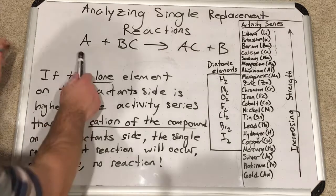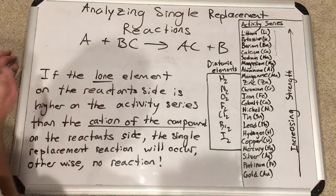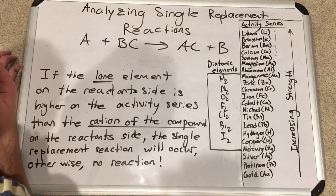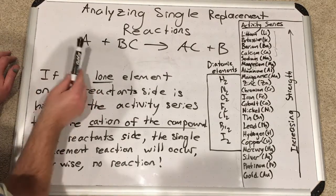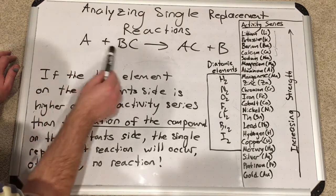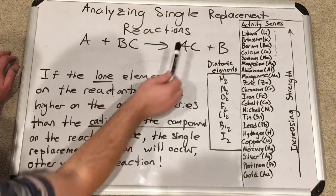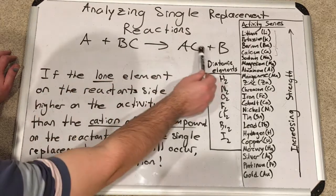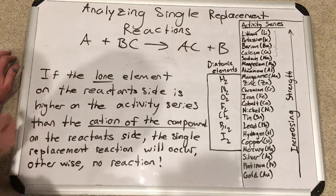We've got the basic model here for these types of reactions. We've got a single element that is combined with a compound here. And what happens is element A, if it meets certain criteria, will knock the cation B off the compound and take its place. And so we have AC as a compound plus B. So these two switch places basically.